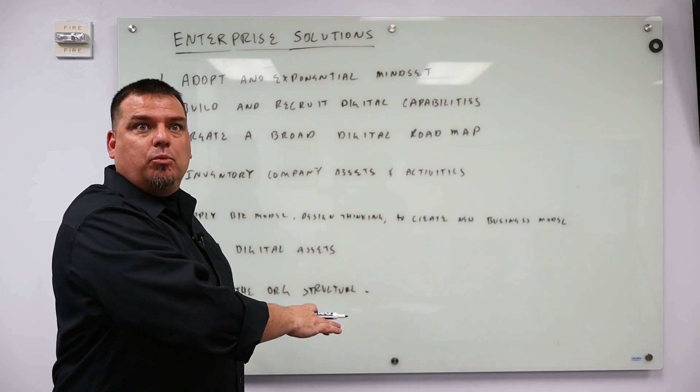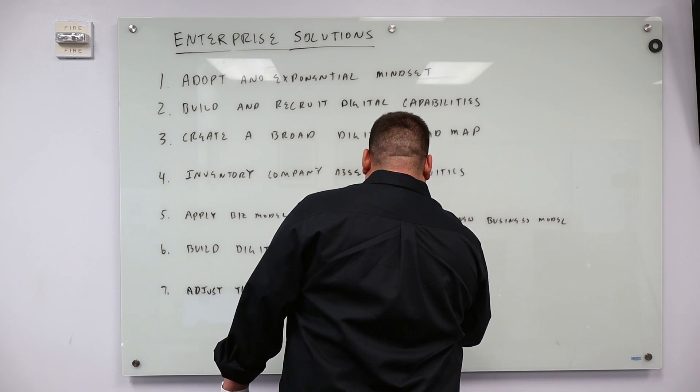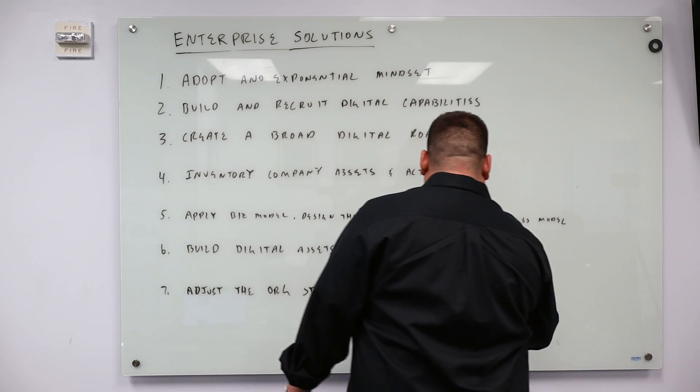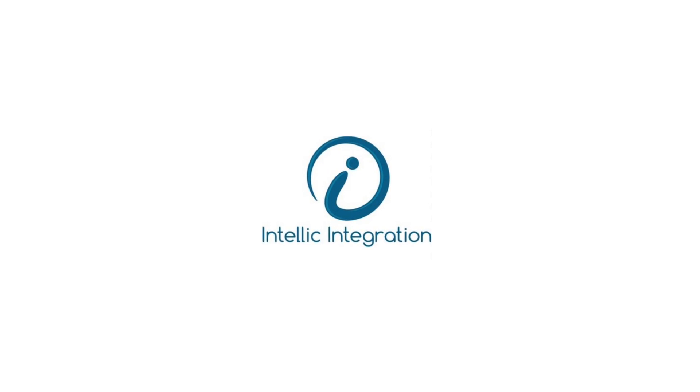And this is an example of how to do it wrong, which is what I'm writing up here. Adjust the org structure, start small, go big. A couple of years ago, Forbes wrote this article to executives.